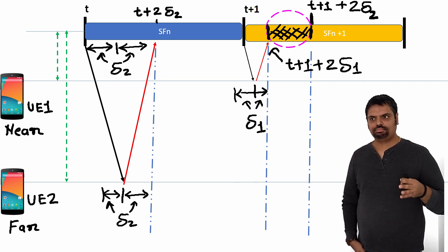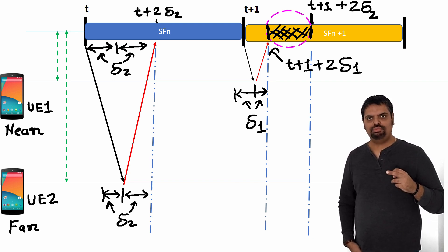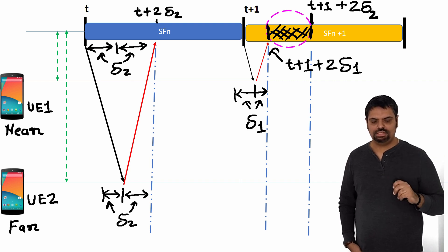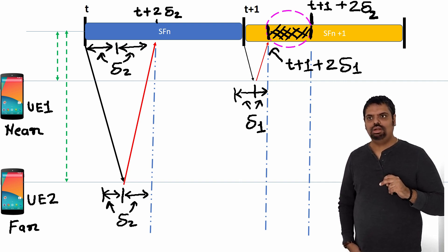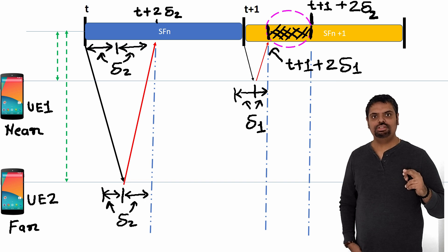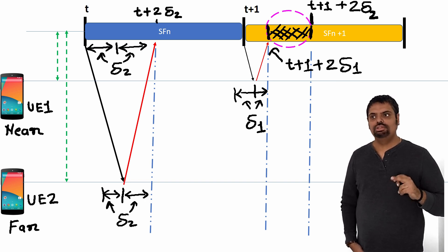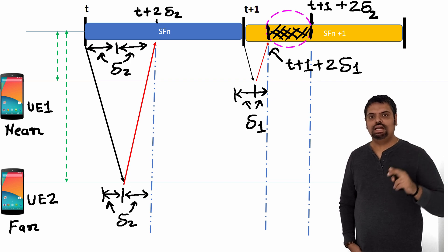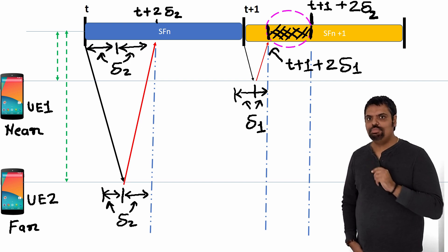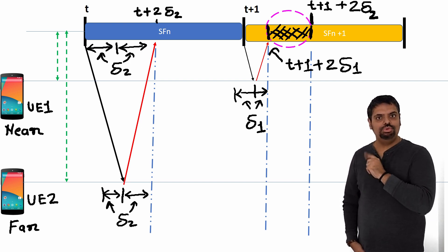Let's say resource block 4 is allocated to UE2 on the uplink for a subframe starting at time T and ending at time T+1. In order to start the uplink transmission, UE needs to determine the time of the downlink subframe, based on which it will find the reference point to start the uplink transmission, so that uplink and downlink are synchronized at the eNB side. For that purpose we use timing advance at the UE side.